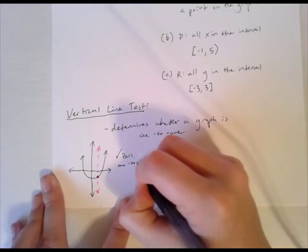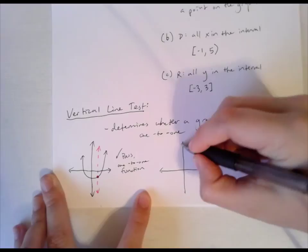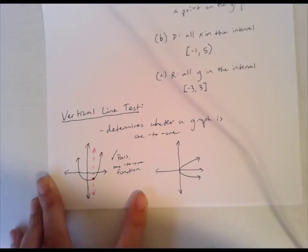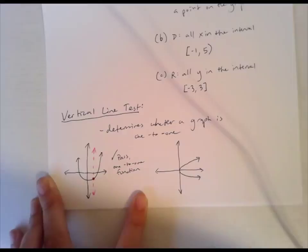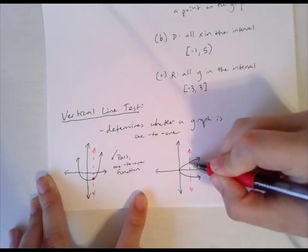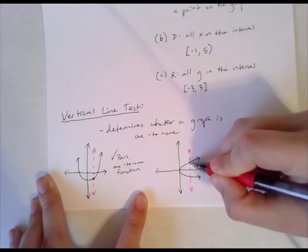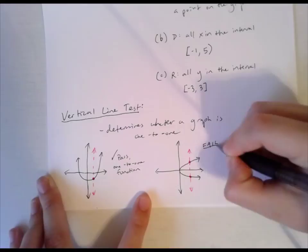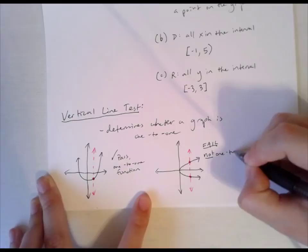If we put that parabola on its side — something like plus or minus the square root of X — and draw a vertical line through it, it crosses at two places, not just one. So that fails the vertical line test — it is not one-to-one, and it is not a function.